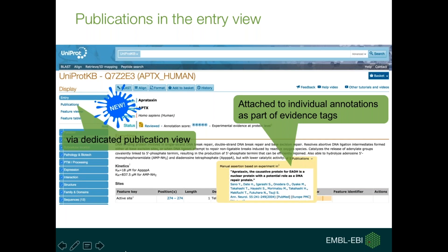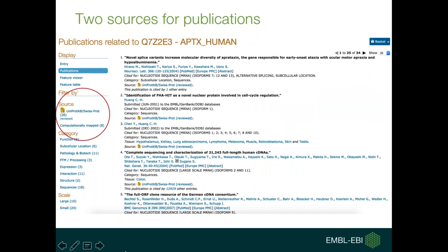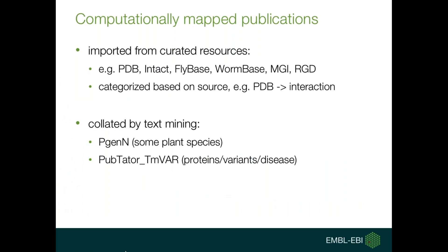On the website, publications are available first and foremost attached to individual annotations as part of the evidence tags, as shown here, and that has been the case for a long time. But we now also have a dedicated publication view, which is a fairly recent addition to the website. Clicking on this publication link opens a new representation of publications that incorporates filters and also provides access to mapped publications. Circled in red are the source filters, which tell you that there are 26 papers added to this entry that have been reviewed by a curator.